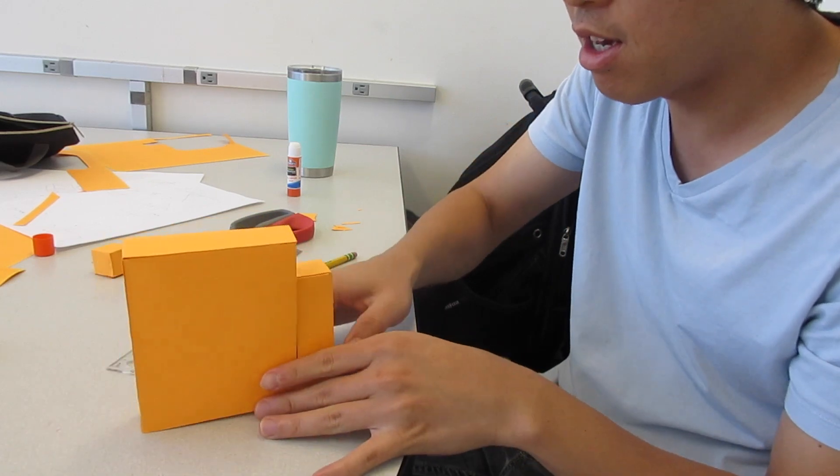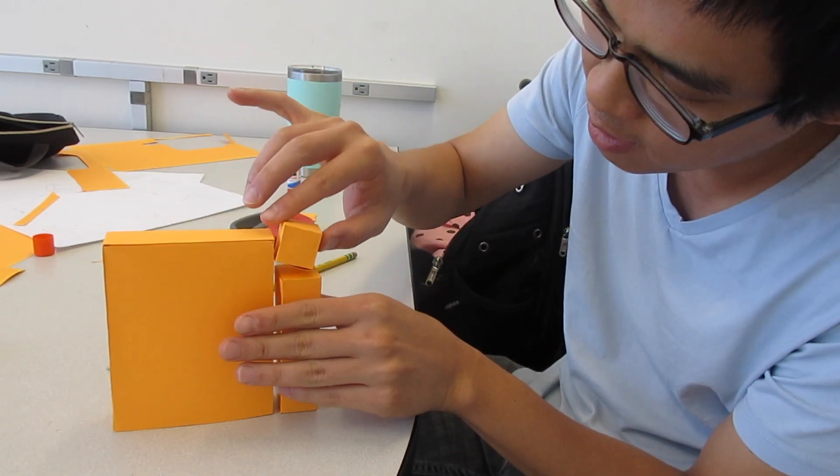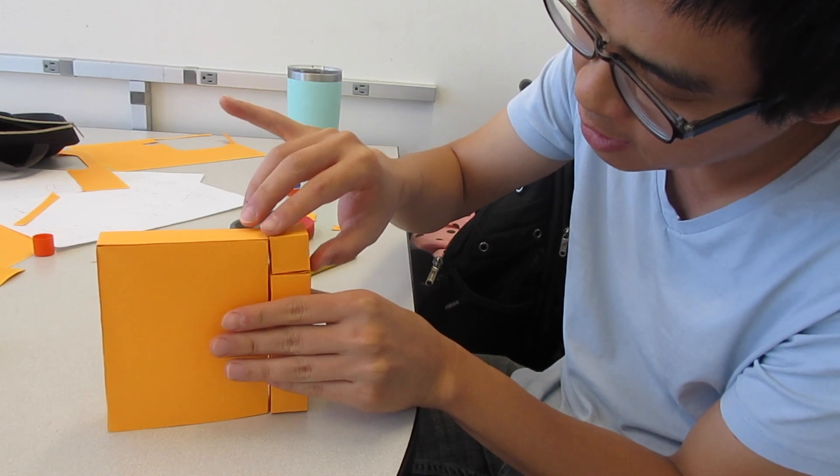And so if I do it right, this should kind of form one big box together. Something like this. All right, and we have to do one more, but this last one is actually too big for one piece of paper. So I need to cut maybe two pieces of paper and kind of combine it together. So let's go.